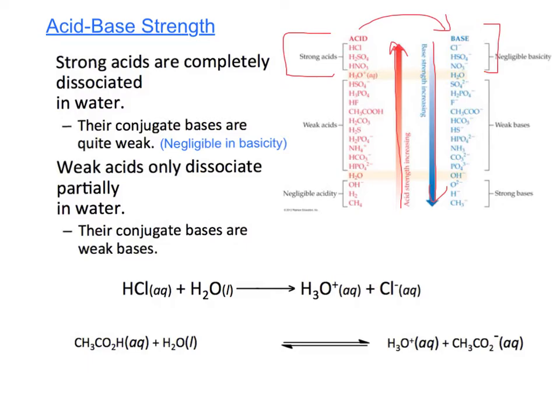Weak acids only dissociate partially in water and they're here. Their conjugate bases are weak bases here, so the conjugate bases of a weak acid are stronger than the conjugate bases of strong acids.